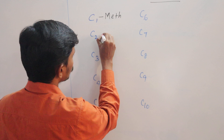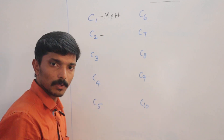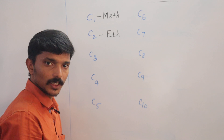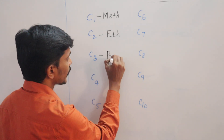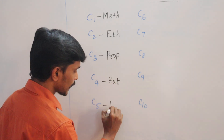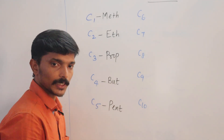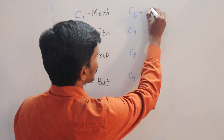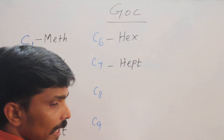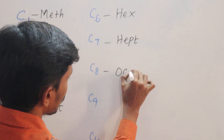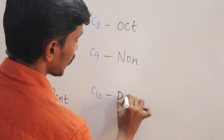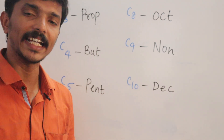For one carbon: Meth, two carbons: Eth, three: Prop, four: But, five: Pent, six: Hex, seven: Hept, eight: Oct, nine: Non, ten: Dec. So we use these prefixes to denote the number of carbons in organic compounds.